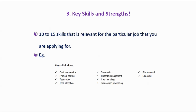Number three: key skills and strength. List ten to fifteen skills that you possess which are relevant for the particular job you are applying for. For example, if you are applying for a salesperson job, relevant skills include customer service, problem solving, teamwork, task allocation, supervision, record management, cash handling, transaction processing, stock control, and coaching. Understand yourself and write your skills. Make sure you don't specify a skill which you don't have, because that will create a problem in the future. Analyze yourself, understand your good qualities, and specify your key skills accordingly.